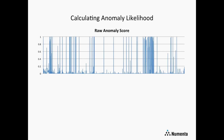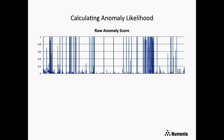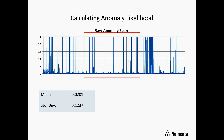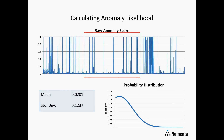Going back to the example with many high raw anomaly scores — how does anomaly likelihood work here? Imagine we're on the right side of a historical window shown in a red box. We take that window of raw anomaly scores, compute the mean and standard deviation, which define a probability distribution curve. We then use this curve to determine for new values how likely it is that they represent normal behavior for this particular data stream.